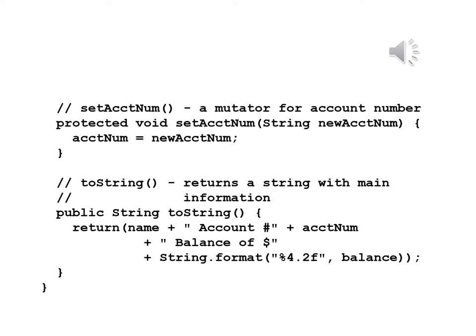And lastly, toString: public String toString, return name plus " account number " plus accountNum plus " balance of $" plus String.format("%4.2f", balance). This will give us a string in the form of money with two decimal places, and we'll have a dollar sign in front.